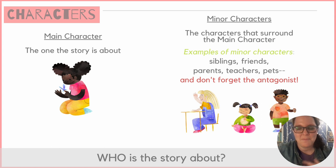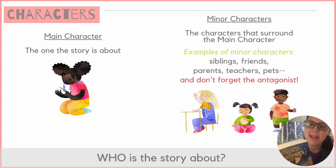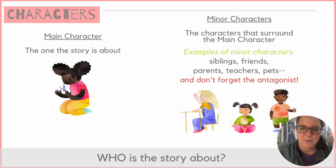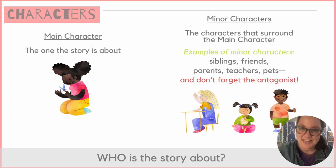Even though you can read a book that has many many characters, usually there's one main character. In my case, I actually wrote a book — Heroes of Haven Song: Dragon Boy — and it's actually a whole series where there are four main characters. Sometimes you can have more than one, but typically you'll find just one main character. Then you have your minor characters — the characters that surround the main character — and some examples might be siblings, friends, parents, teachers, pets, and don't forget the antagonist.